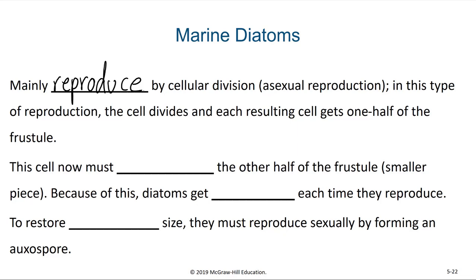This means that one of the diatoms will end up being the same size as the original parent, but one of the diatoms will be smaller. When that smaller diatom divides, one of its offspring will be that smaller size and then one of them will be even smaller. After cell division, the cell must secrete the other half of the frustule, and because of this, diatoms get smaller each time they reproduce — or at least half of the offspring will always be smaller than the original parent's cell.